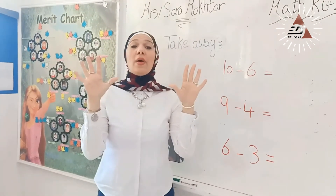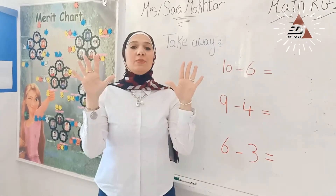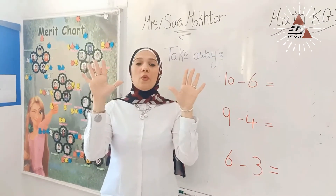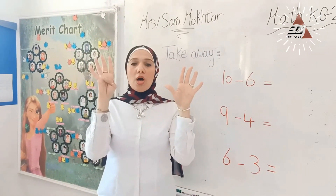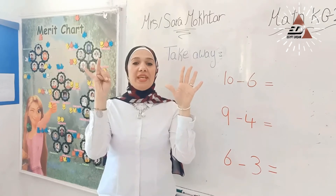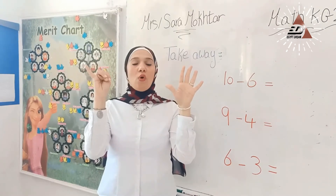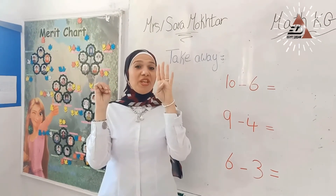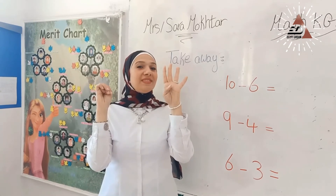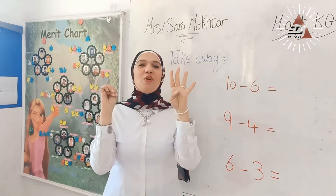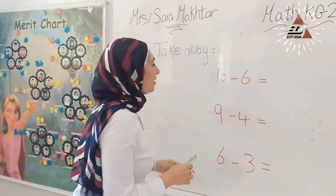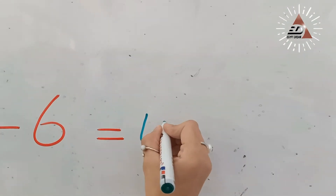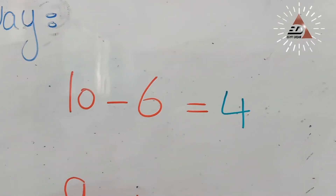And I want you to take away the smaller number, 6. Take away 6: 1, 2, 3, 4, 5, 6. How many fingers are left? Yes, 4. Now, write number 4 after the equal sign.